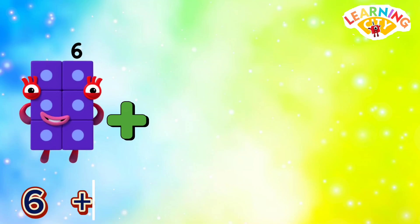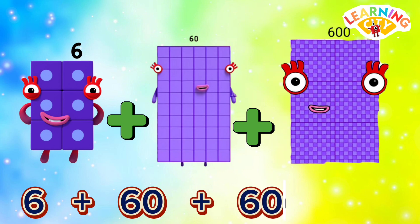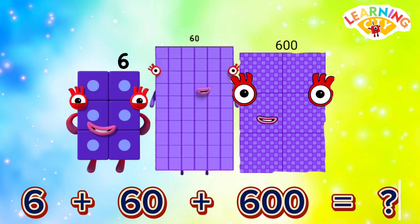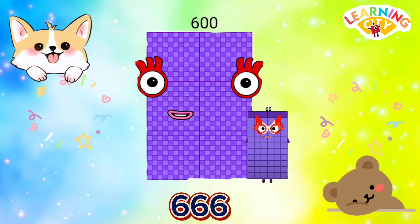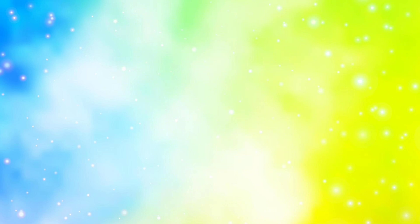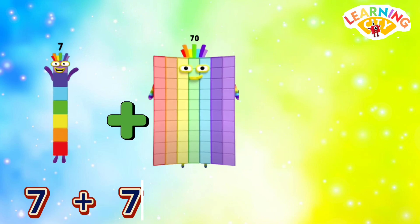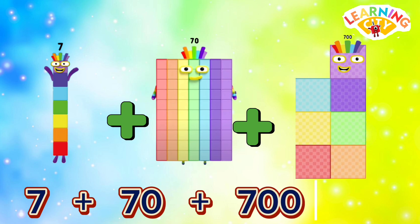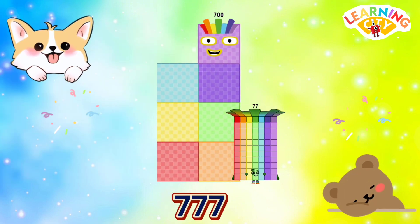6 plus 60 plus 600 is equals to 666. 7 plus 70 plus 700 is equals to 777.